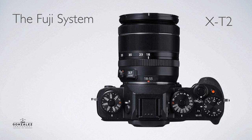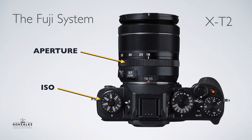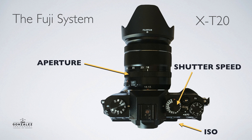On the Fuji system there are no dials that switch the modes. Instead you pick your modes by choosing what you want the aperture, shutter speed, and ISO to do. On a lens, the aperture can be switched with an aperture ring - some Fuji lenses have one, some don't. On the XT2 there's an ISO dial and a shutter speed dial. On the XT20 there's an aperture ring on the lens and a shutter speed dial, but no ISO dial - you'll have to change ISO using the menu system, quick menu, or a special button you've configured.